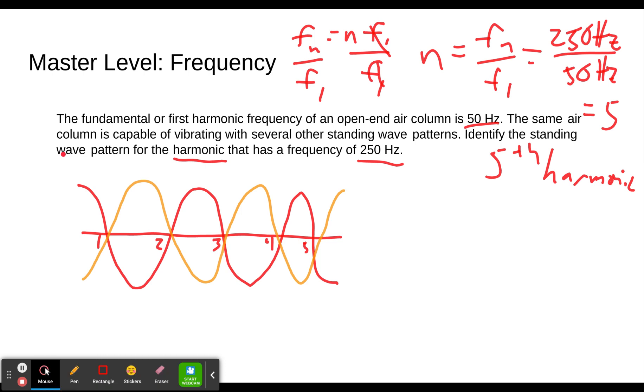Once again, just to run through that, we use our equation for the frequency between different harmonics. We solve for n. We put the frequency of the harmonic we're working with at the top. We put the fundamental frequency or the frequency of the first harmonic down at the bottom. We divide. We get our answer. That's the number of the harmonic. The harmonic 5 gives us the 5th harmonic. We pick a picture that has 5 nodes because that would be the 5th harmonic.